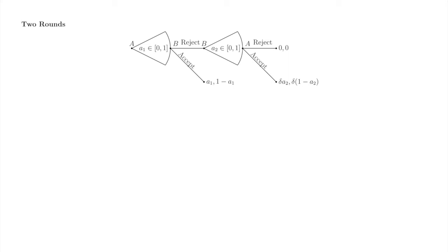Second, note that the players take turns offering. In the first round, A offers and B either accepts or rejects. As in the ultimatum game, if B accepts, the players receive their respective shares of the pie and the game ends. If B rejects, it instead becomes B's turn to offer and A's turn to accept or reject that offer. If A rejects, each player receives 0 and the game ends. If A accepts, the players receive their respective shares and the game ends.